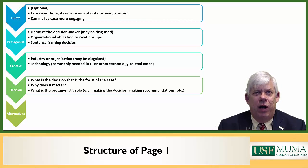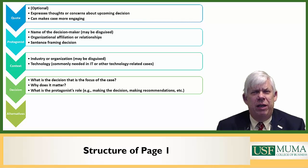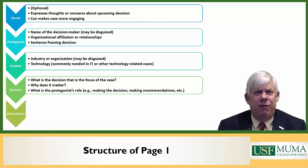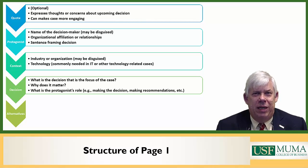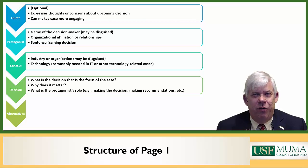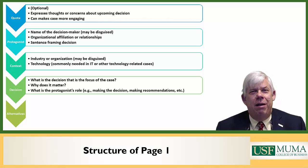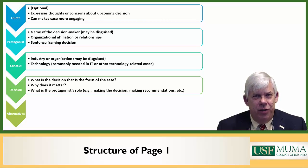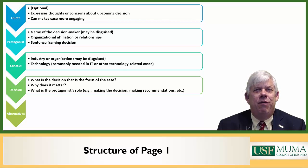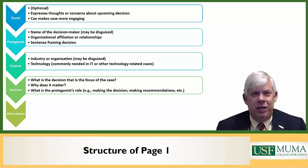Finally, we have one more optional section: where we look at alternatives being considered. Especially when you're dealing with inexperienced participants in a case discussion, it's really useful to have some alternatives so they can use those as a starting point. You almost never want to say these four alternatives are the only things that can be considered, though in some cases that may be accurate. Instead, you may want to leave it open that other alternatives can be proposed. If you frame a case without any alternatives, just presenting a decision, it's going to be very hard for inexperienced participants to discuss it.